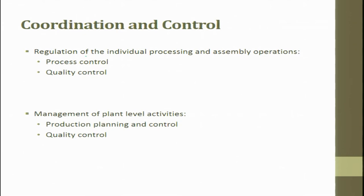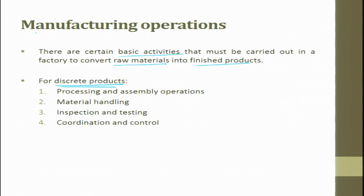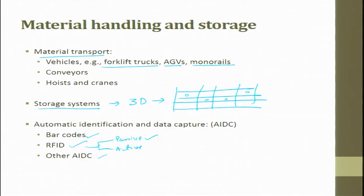Coordination and control involves the regulation of individual processing and assembly operations — process control and quality control. The management of plant-level activities includes production planning and control and quality control. These are the varying manufacturing operations conducted in a factory: processing and assembly, material handling, inspection and testing, and coordination and control.